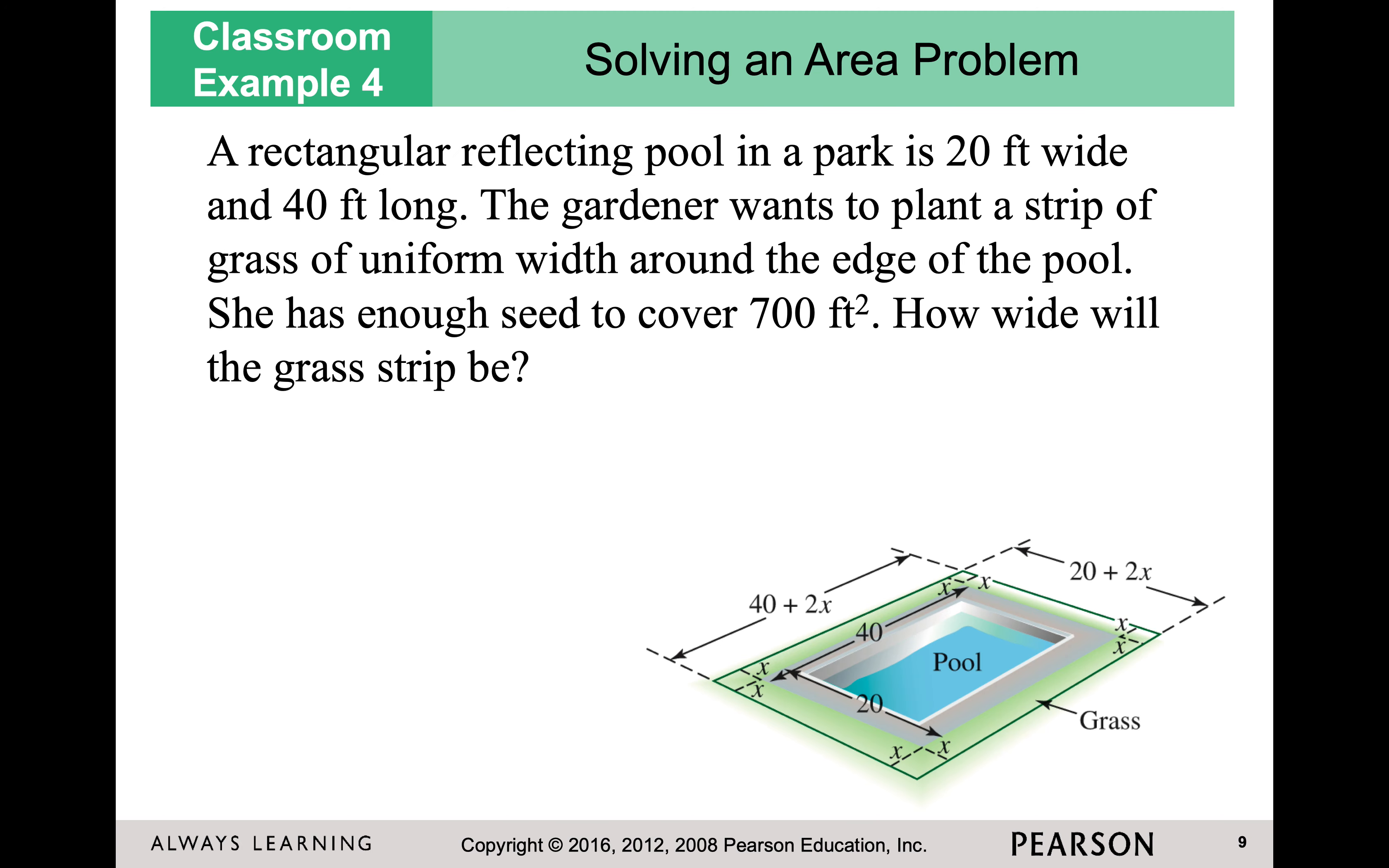So area is related to quadratics because our area is typically length times width. And a lot of times we wind up with squares when we're dealing with variables. So in this example, I have this rectangular pool. It's 20 feet wide and 40 feet long. But this gardener is adding on to that frame and she wants enough seed to cover it 700 square feet. How wide will that strip be? So you see how we have these little x values.